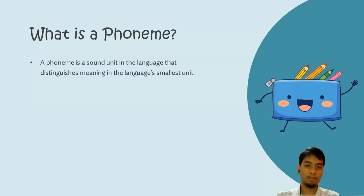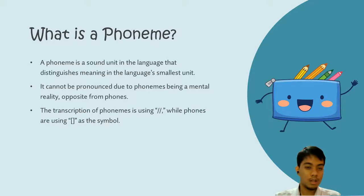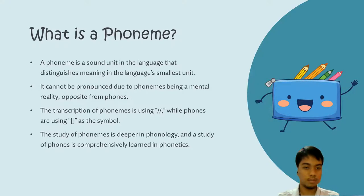So basically, what is a phoneme? A phoneme is a sound unit in a language that distinguishes meaning in the language's smallest unit. It cannot be pronounced due to phonemes being a mental reality, opposite from phones. The transcription of phonemes uses double slashes, while phones use square brackets as the symbol. The study of phonemes is deeper in phonology, and the study of phones is comprehensively learned in phonetics. The examples are E, Y, and A.